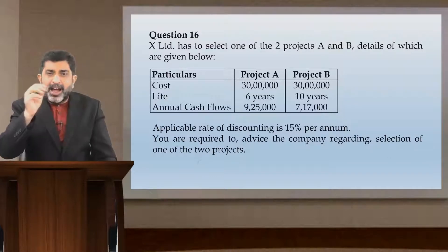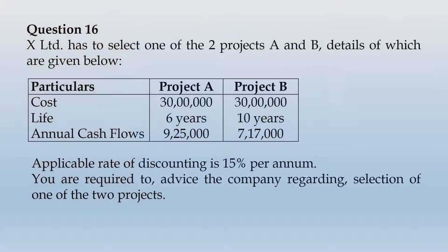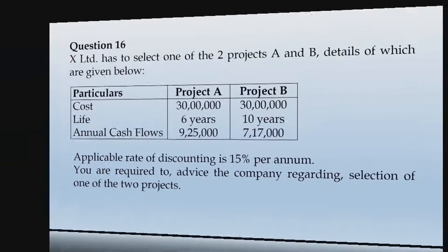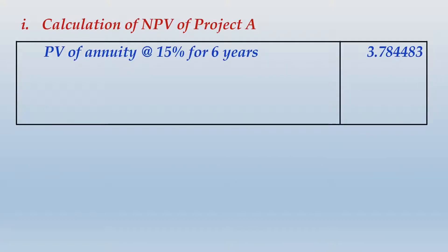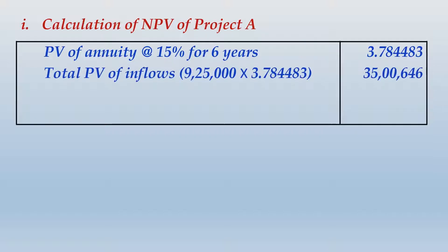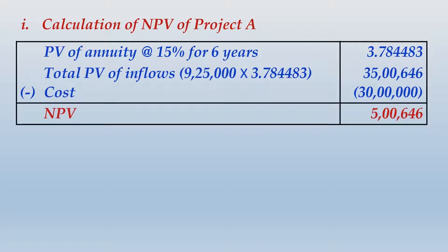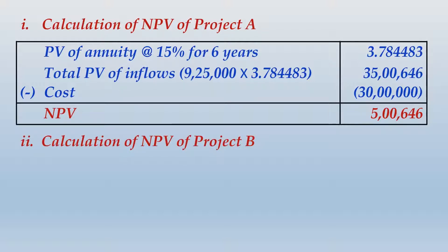Let us begin solving this question. Starting with NPV of project A: the present value of annuity at 15 percent per annum for six years is 3.784483. Total PV of inflows is annual cash flow multiplied by this annuity factor. From that you subtract the PV of outflow, or cost, and what you get is the NPV — 5,00,646, that is rupees 5 lakh and 646.